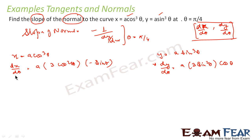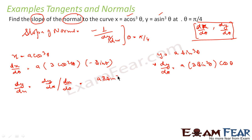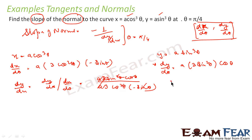So I have dx/dθ and dy/dθ. Since we wanted dy/dx, we compute dy/dx = (dy/dθ)/(dx/dθ) = [a · 3sin²θ · cosθ] / [a · 3cos²θ · (−sinθ)]. The a's cancel, the 3's cancel, sin²θ and sinθ cancel, and cosθ and cos²θ cancel. What's left is −sinθ/cosθ = −tanθ.